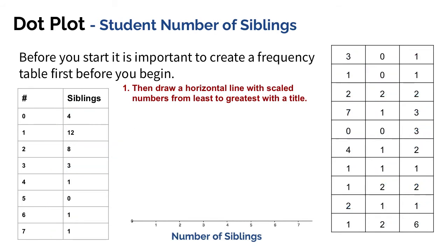Here's that same information just with the number of siblings filled in — it's just a little cleaner and a little easier to look at. So now I'm ready to make my dot plot.